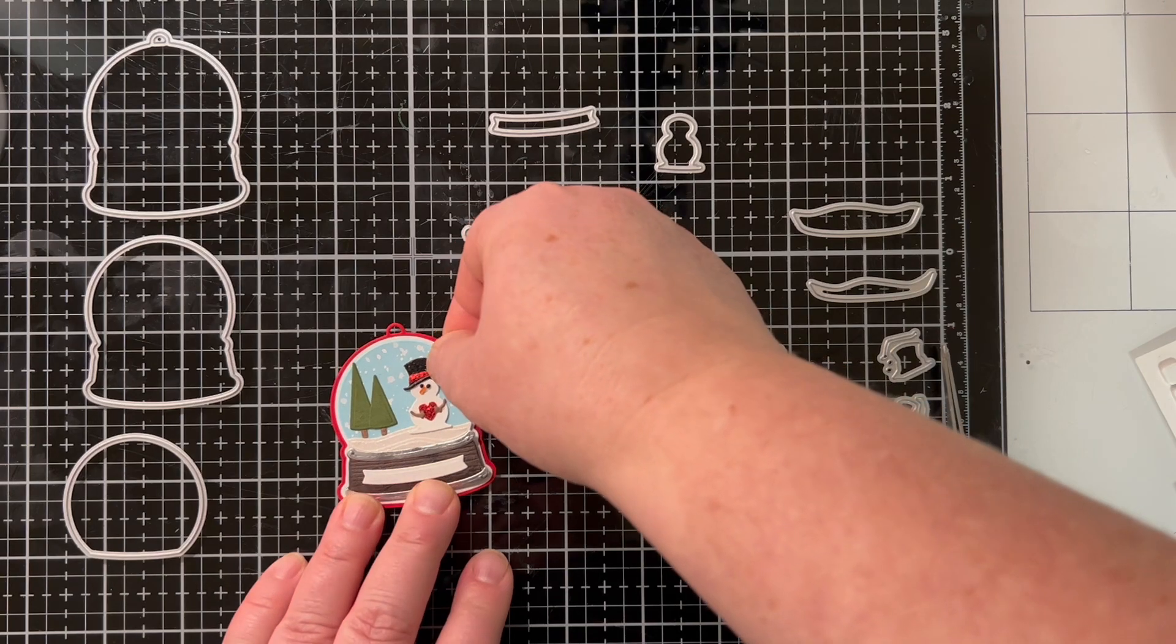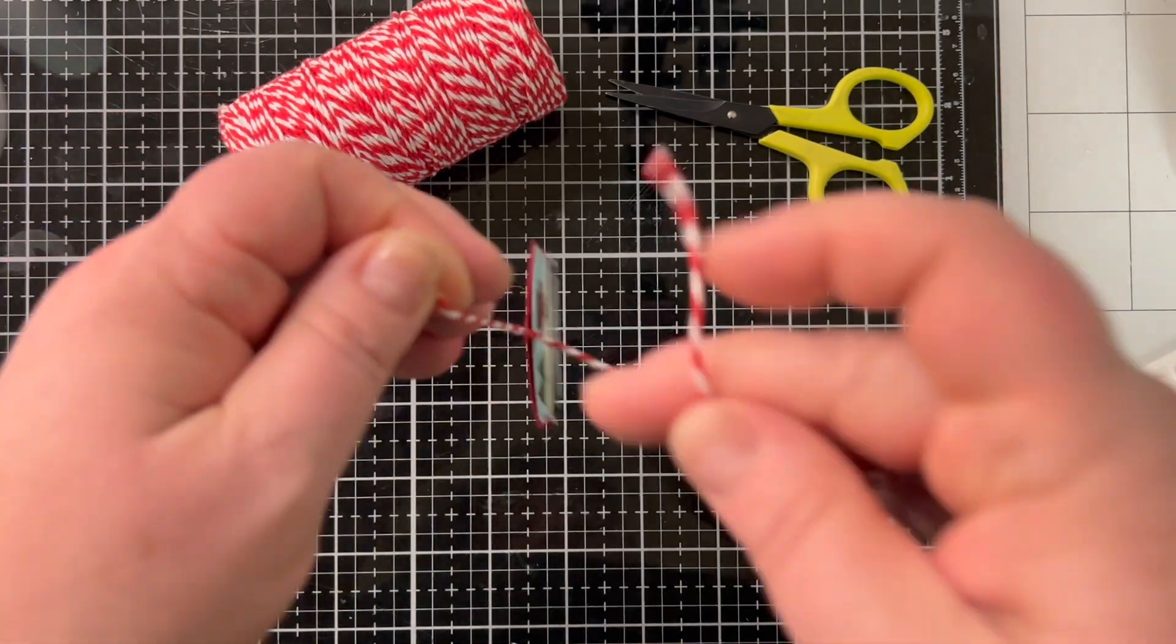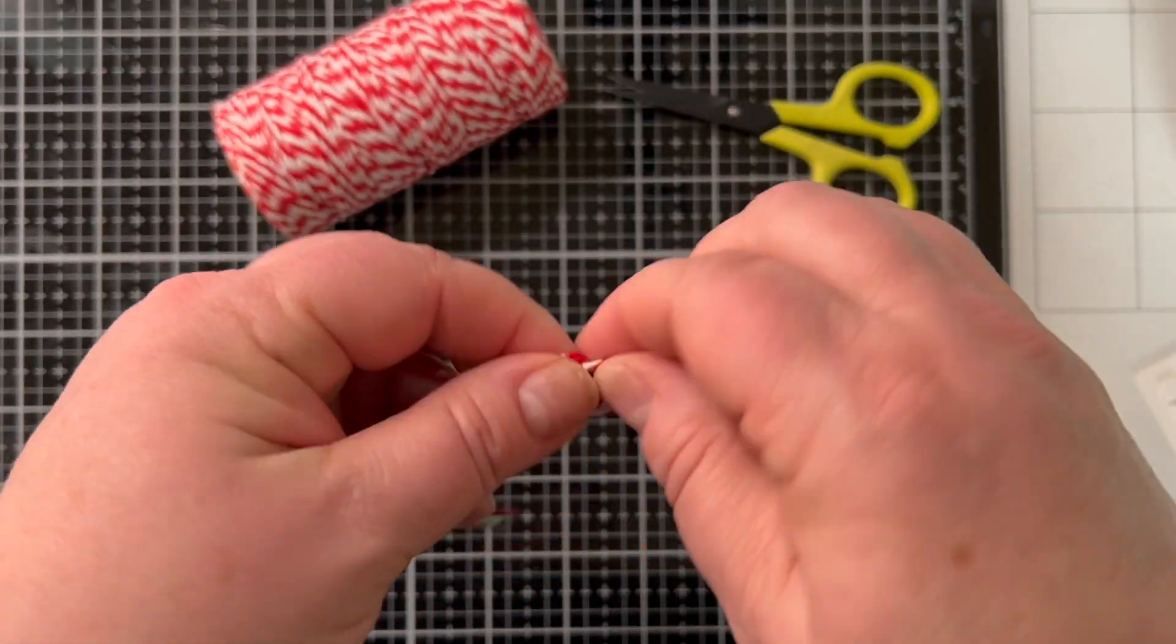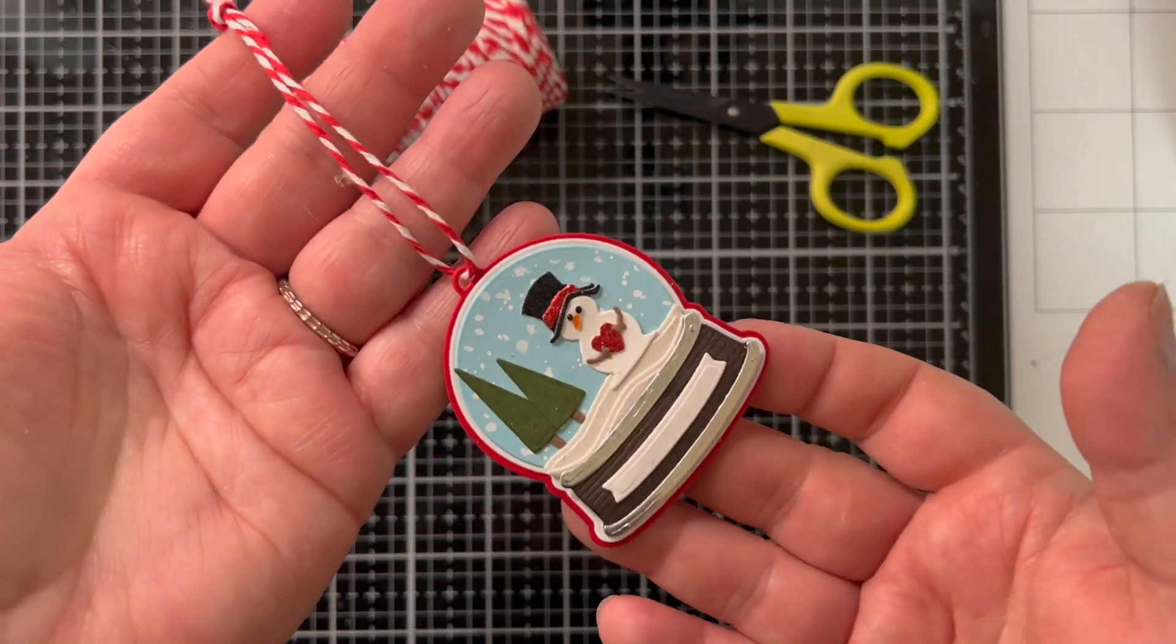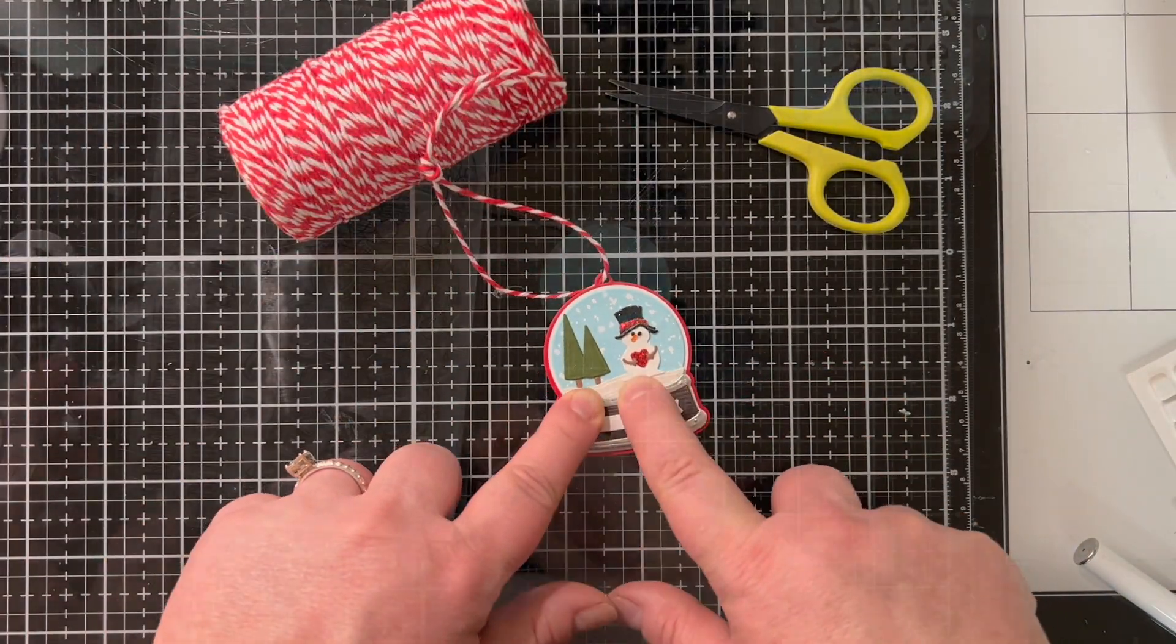This is the tag portion, so if you want to turn this into a tag there's a separate die for that and it has the little topper there so you can just add some twine and it's good to go as a tag. Write the name on that little label, it's really cute or do a to and from on the back.